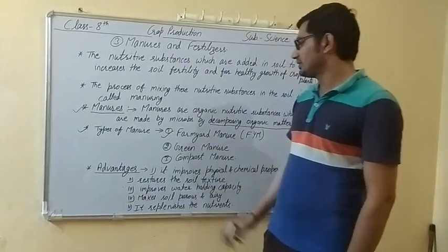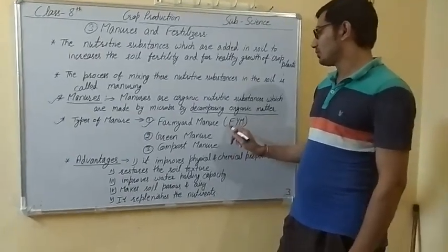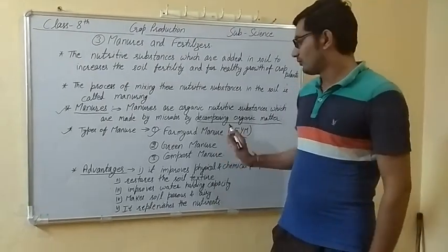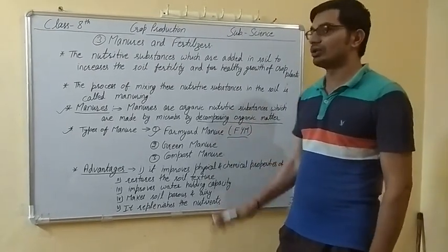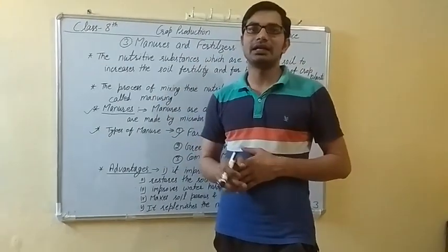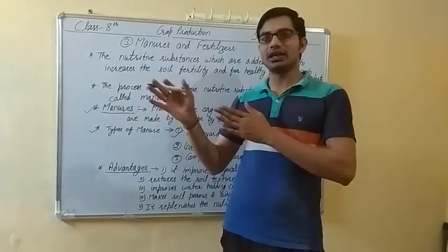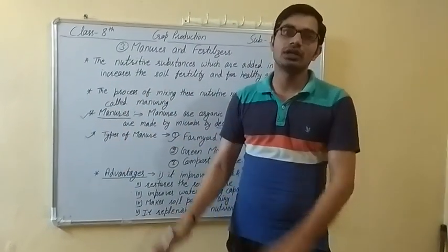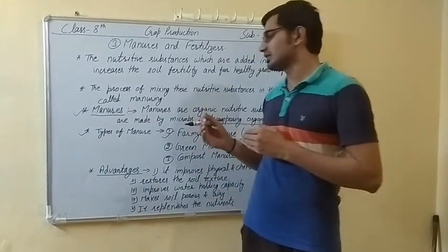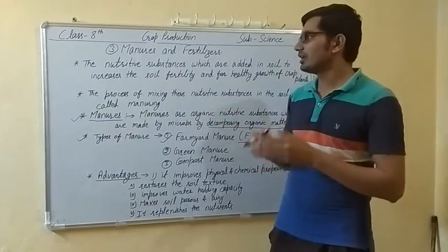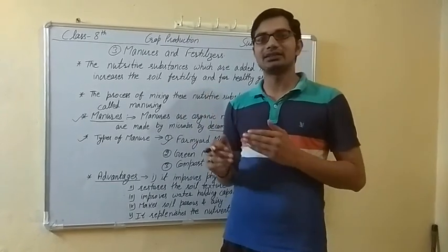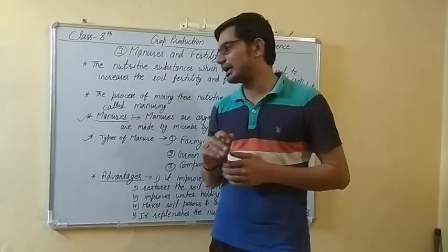The first one is farmyard manure, that is FYM. In this, we collect the plant and animal waste in a corner of the field, where these substances convert into manures naturally by the action of microbes.